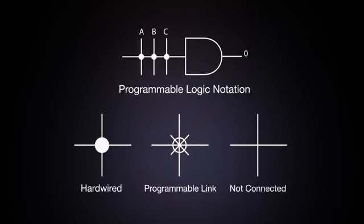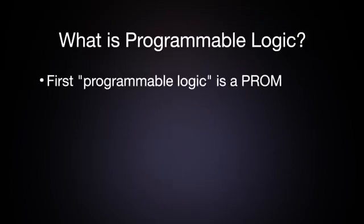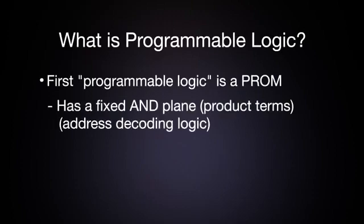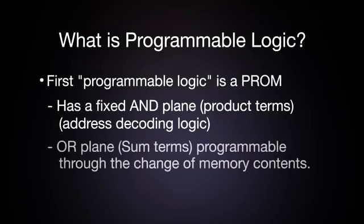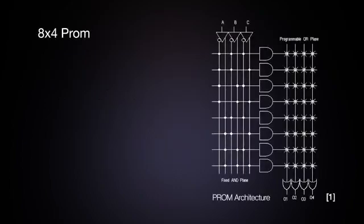A dot for hardwired, an X for programmable link, and a blank for no-connect. As you can see, programmable logic is as easy as A, B, C. In fact, the first programmable logic is a PROM. The PROM has a fixed AND plane, or product terms, which is the address decoding logic. The OR plane, or the SUM terms, is programmable through the change of memory contents. This is an 8x4 PROM depicted here.